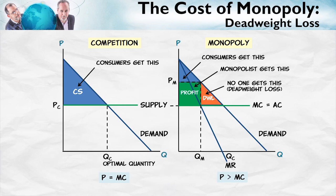So the basic lesson is this: consumers buy a good so long as the value to them exceeds the price. Under competition, price is equal to marginal cost, so consumers will buy every unit such that the value to them is greater than the marginal cost — that's efficient. Under monopoly, consumers also buy so long as the value to them is greater than the price, but since price is greater than marginal cost, we get too few units produced and a loss in the gains from trade.